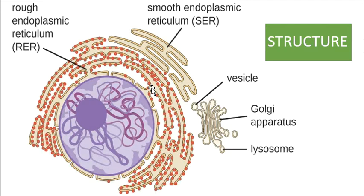The occurrence of endoplasmic reticulum varies from cell to cell within eukaryotes. For example, erythrocytes, egg and embryonic cells do not have endoplasmic reticulum. However, other cells like epithelial cells of the intestine, brain cells, kidney cells, liver cells, hepatocytes, and hepatic cells — all these cells will have endoplasmic reticulum, leaving RBCs, egg and embryonic cells.